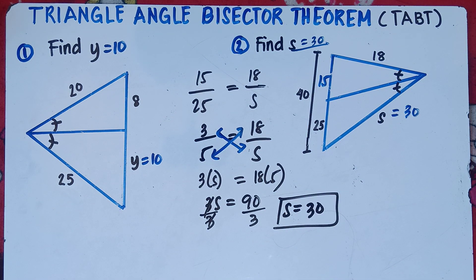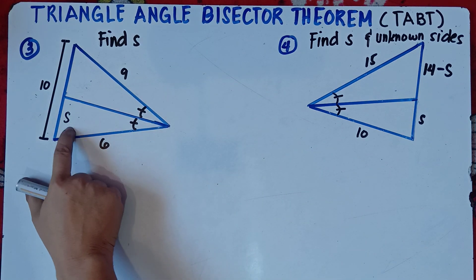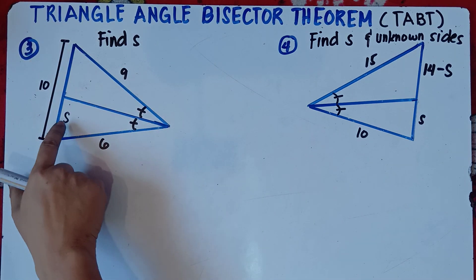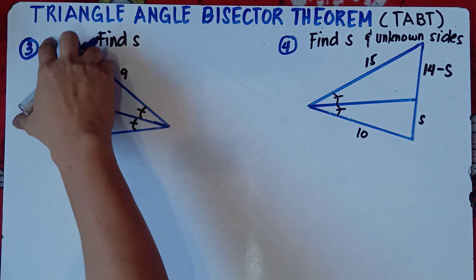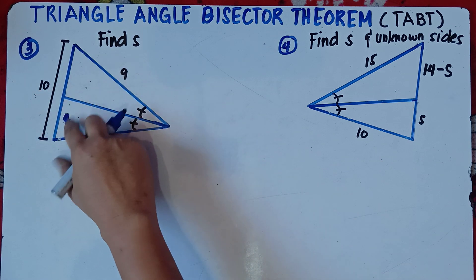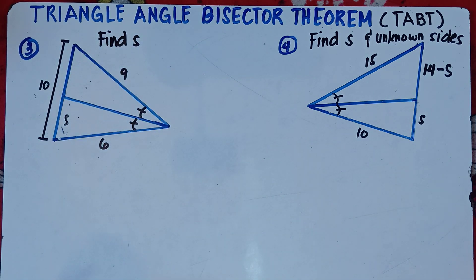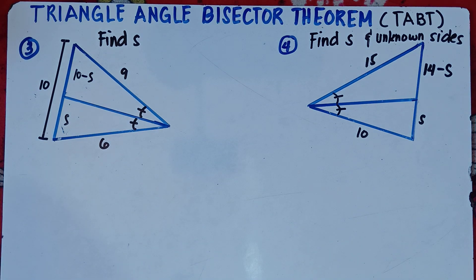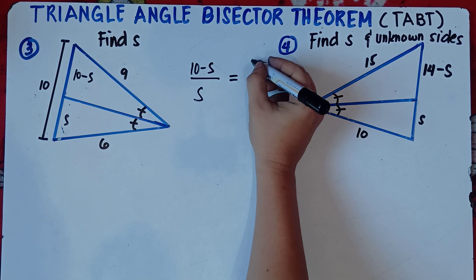Let's try two more examples. Example number 3, we're told to find S, given sides 9 and 6 with a total of 10. Since one side is S, the other side is 10 minus S. The proportion is: (10 minus S) over S equals 9 over 6. Reduce 9 and 6 by 3: (10 minus S) over S equals 3 over 2.